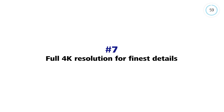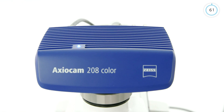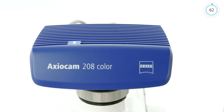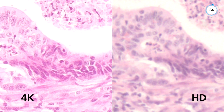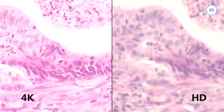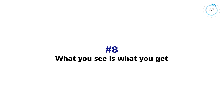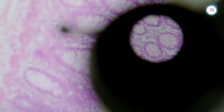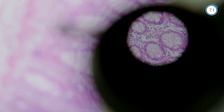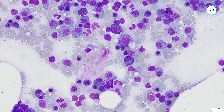Axiocam 208 provides live images with 4K resolution at 30 frames per second. Finer details are resolved and become discernible. Visualize and document your sample in natural colors where even subtle color differences are clearly visible.